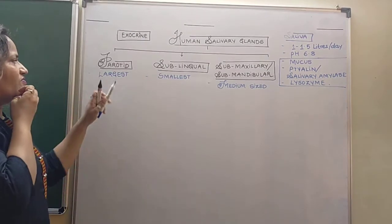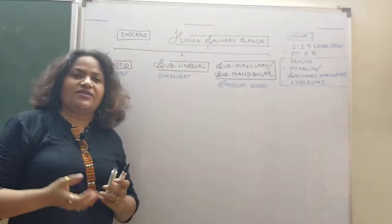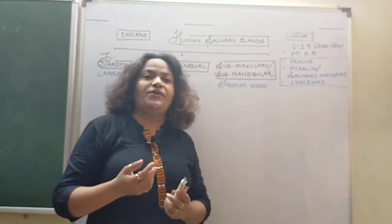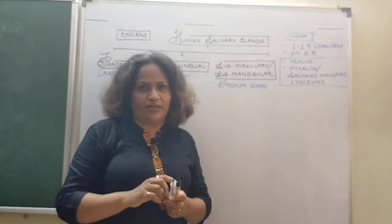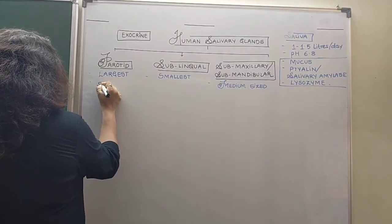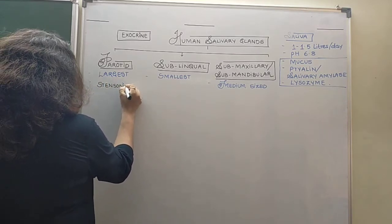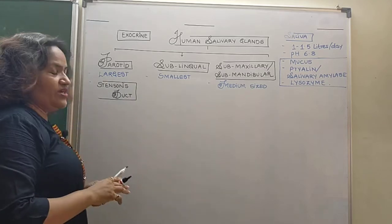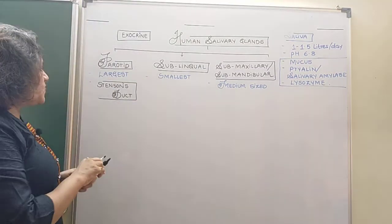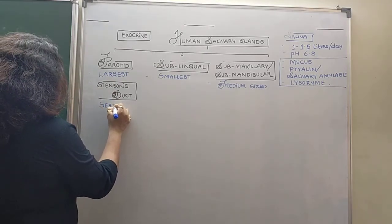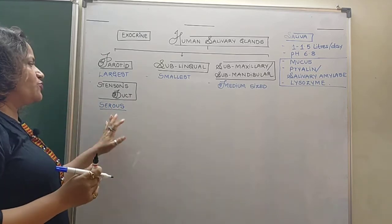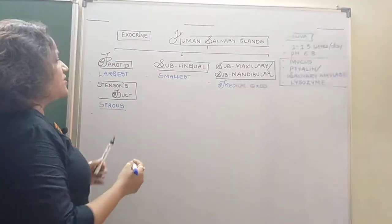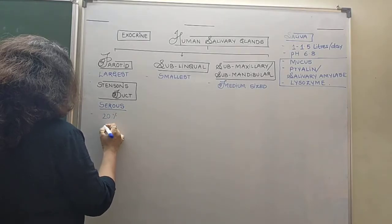The parotid glands, which are the largest, are present slightly below and in front of the ear. They open up exactly in front of the upper second molar teeth by means of a duct called Stenson's duct. The parotid gland is a serous kind of gland — its secretion is serous in nature because it consists of enzymes, and it contributes almost 20% to the saliva.